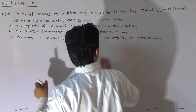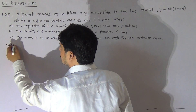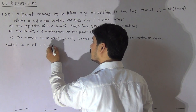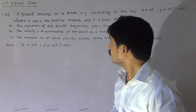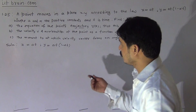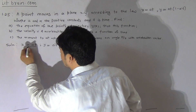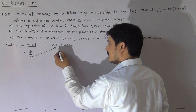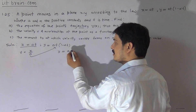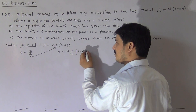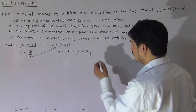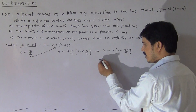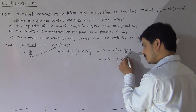For solving this problem, according to the given condition, the x coordinate of the particle is given as x equal to at, and the y coordinate is equal to at(1 minus alpha t). For finding the equation of trajectory, we obtain the value of t from the first equation: t equals x by a. Putting this value of t in the second equation, we get y equal to a(x/a)(1 minus alpha(x/a)), which gives y equal to x(1 minus alpha x over a), or y equal to x minus (alpha/a)x squared. This is the equation of trajectory.